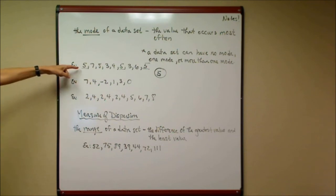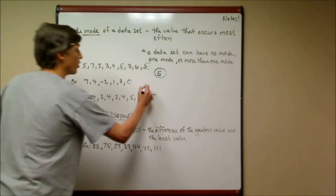Now here's a good one where if you put them in order from least to greatest, you'll have the numbers bunched together, and you can see which one occurs most often or more readily. In this example, seven, four, negative two, one, three, zero, none of the numbers are repeated. So there is no mode.